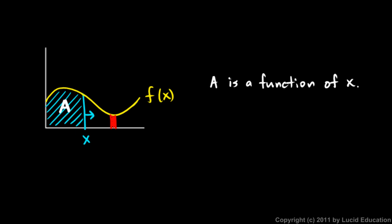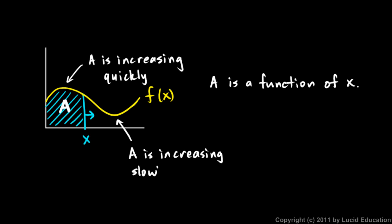as tall. So let's make a note of that. I'm going to say here, area is increasing quickly. So the area is increasing quickly at that point because the value of the function is high. And right here the area is increasing slowly because the value of the function f is low.